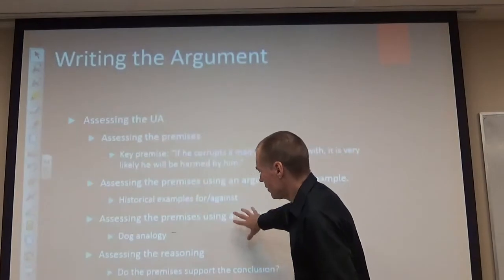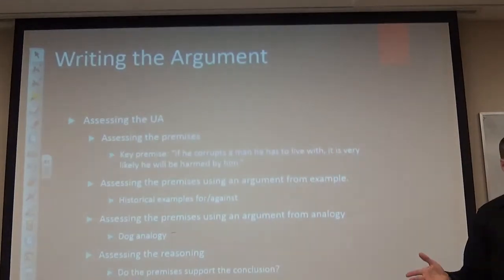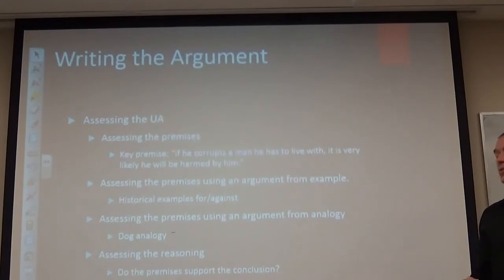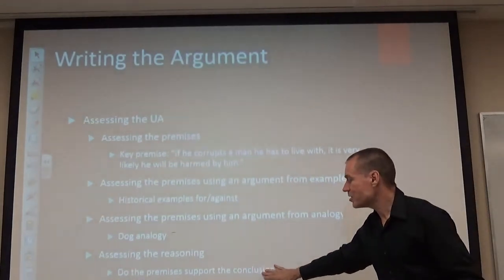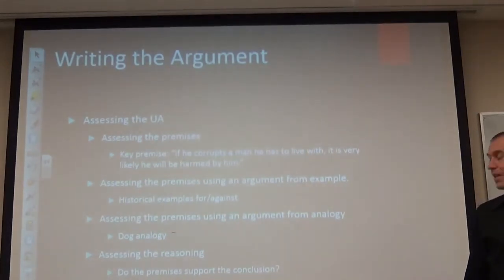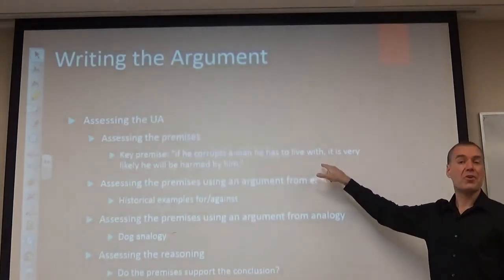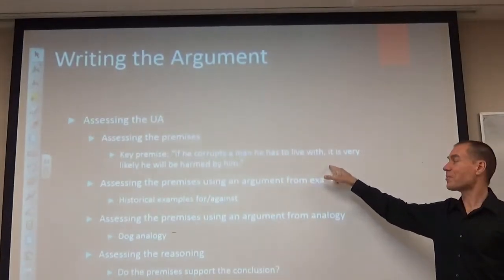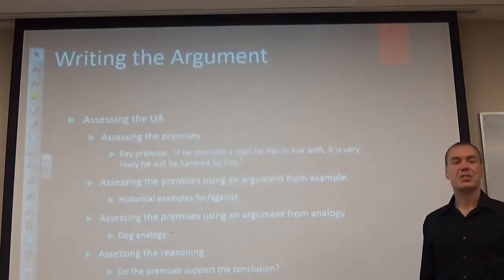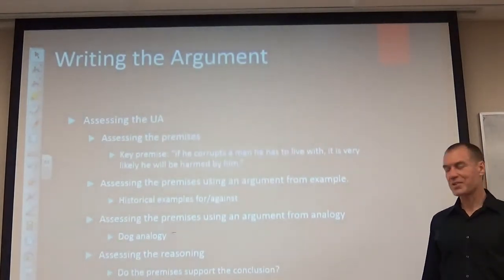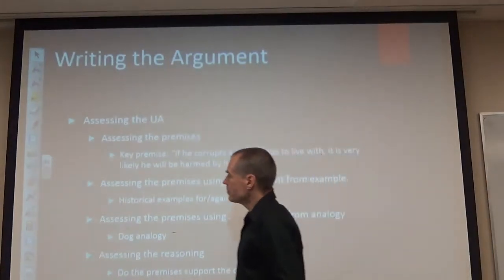Also assess the general reasoning of the argument. The core is: if I corrupt the youth, they'll probably hurt me; I don't want to be hurt, so I won't do that. Assess whether the reasoning is good. If yes, give a reason why it's sensible. If no, show why the reasoning is bad. When assessing the unintentional argument, the two tasks are: one, is this premise plausible or not — if yes, plus in favor of the argument, if no, minus; and two, is this reasoning good — if yes, plus, if no, minus.